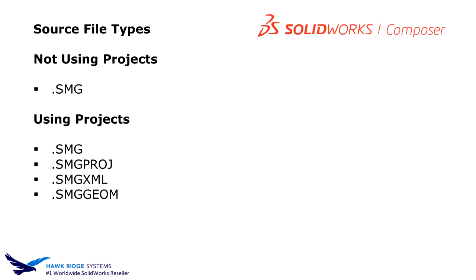A general rundown of file types: if you're not using Projects, you use an SMG file — one file, simple data management and archiving. When you get into Projects, we get into multiple files, breaking things down into a more structured interface. The SMG PROJ is the project file itself, acting as the top-level master assembly. The SMG XML and SMG GEOM are the XML files and geometry files — SMG files broken out into sub-categories to enable importing and management within Projects.